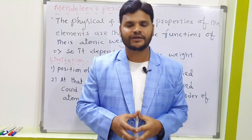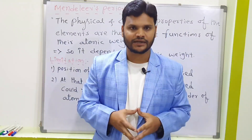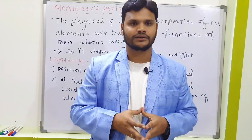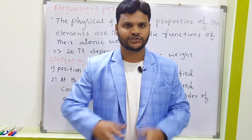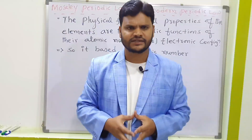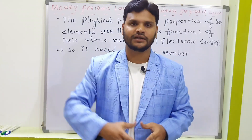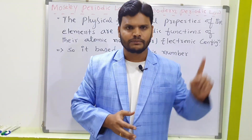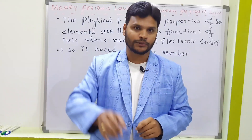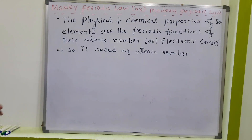Based on Mendeleev's periodic table, one more scientist came — Moseley. We currently follow Moseley's periodic law, which is also called the modern periodic law. The definition: the physical and chemical properties of the elements are the periodic functions of their atomic number or electronic configuration. Mendeleev's law was based on atomic weight, but Moseley's modern periodic law is based on atomic number.